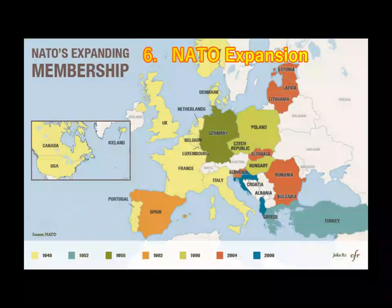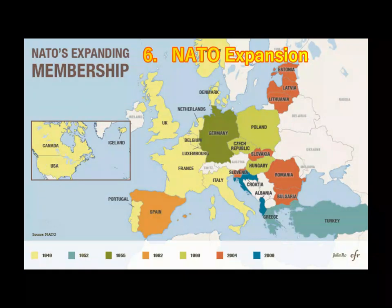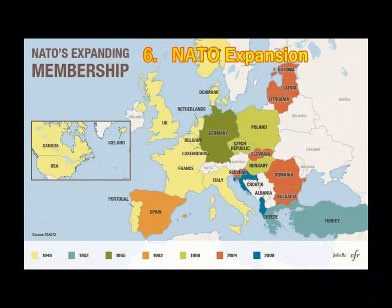NATO Expansion: The Cold War between NATO and the USSR ended with the disintegration of the USSR in 1989. However, even after the USSR's disintegration, NATO has continued to expand. NATO has added 15 member countries after the USSR's disintegration, and most of these countries are on the western border of Russia.